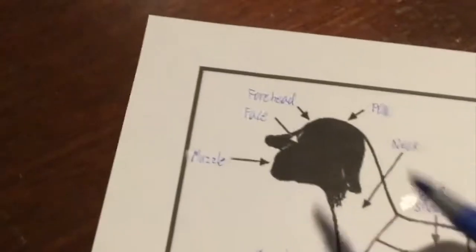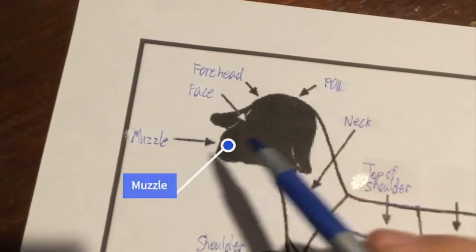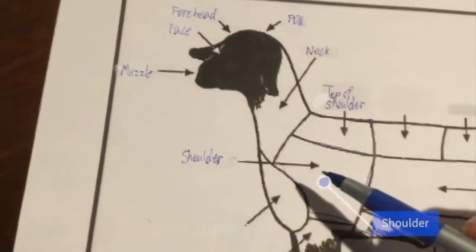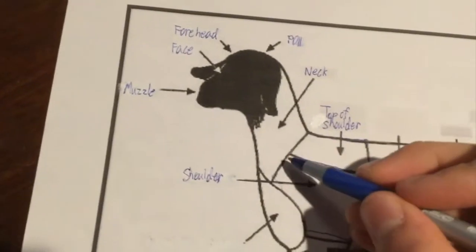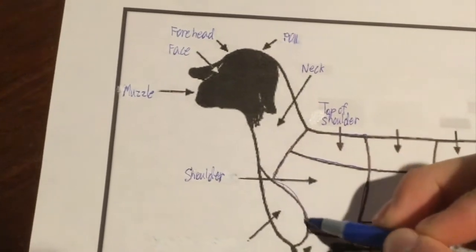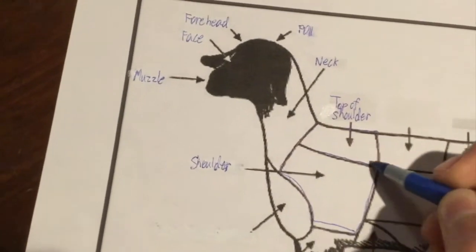This is my sheep parts diagram. And as you can see, there are some already filled in, like the poll, forehead, face, muzzle, neck, top of the shoulder, and the shoulder, because those are pretty easy ones to point out and name.